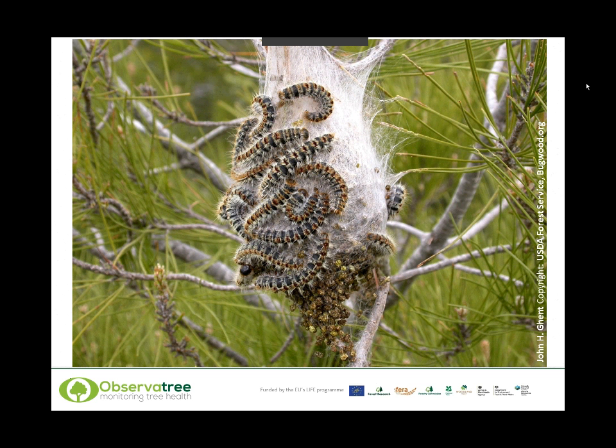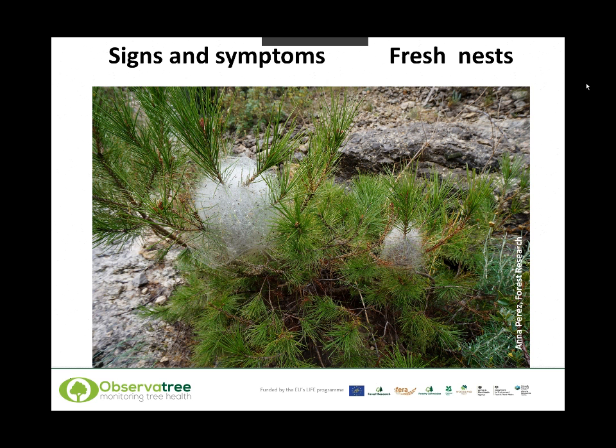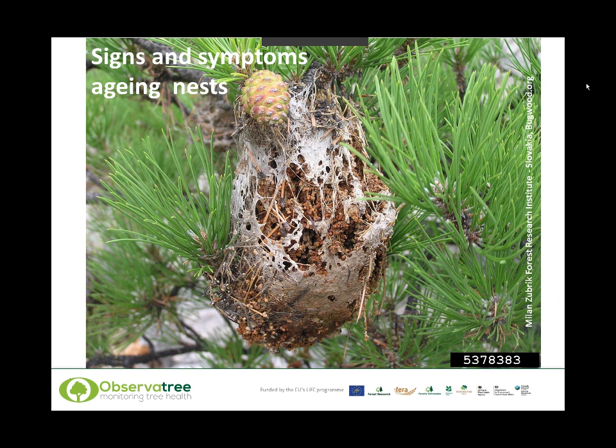The caterpillars tend to spend their days inside the nests, usually only venturing out at night to forage on the needles. Here we have an example of a very early nest — small and not yet white — where you can just about see the white webbing beginning to build up. You can see the browning on the needles on the right caused by the caterpillars feeding. Here are two more fresh nests in the same tree, looking very white and conspicuous — these would be the main indicator of the presence of the pest. Over time these nests become damaged and discoloured, looking very different from when they're first made.